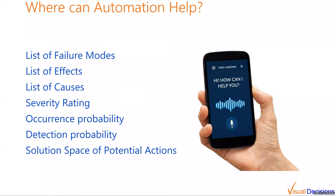So where can we best apply these technologies? Going back to the list of FMEA steps, the following stand out as potential areas where various solutions can provide value: first, generating and maintaining the list of failure modes, effects, and causes; second, generating and maintaining the ratings for severity, occurrence probability, and detection probability; and third, expanding the solution space of potential actions as well. I'll get into more details in the next few slides.